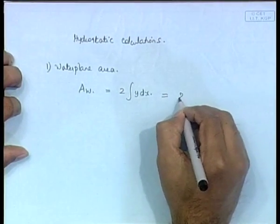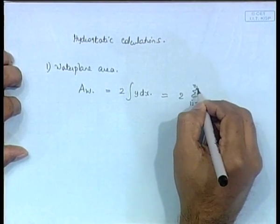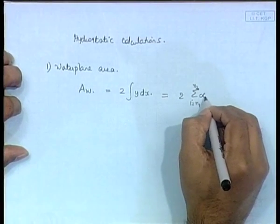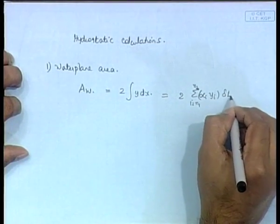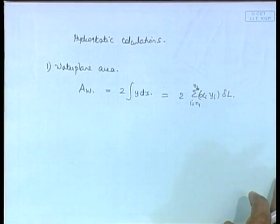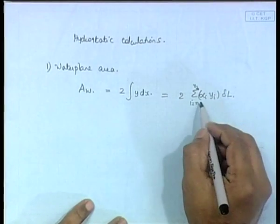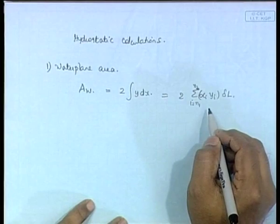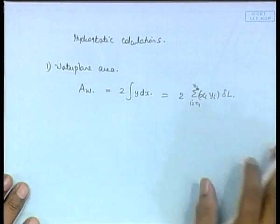We rewrite this integral equation in a discretized form. Here dx is the distance between two stations, which is delta L, and this integral is always written using Simpson's rule or a trapezoidal rule. Alpha_i represents the multiplier — either the trapezoidal multiplier or the Simpson's multiplier. So this is the discretized expression for AW.